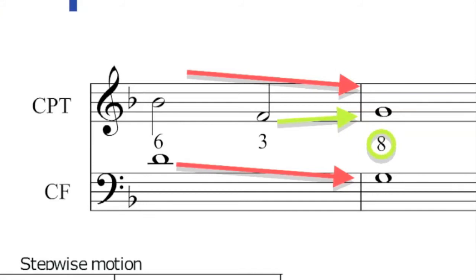So the downbeat of the first bar to the downbeat of the second bar is moving in similar motion to that octave in the second bar alright. It actually depends. It depends on what happens in between.